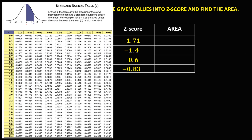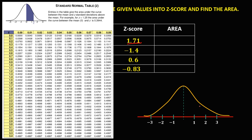To find the area using the Z-table, for Z-score 1.71, on the normal curve this is positive 1.71. The area between the mean and the Z-score is found by looking up 1.7 and adding 0.01 for the second decimal. So the area for 1.71 is 0.4564.